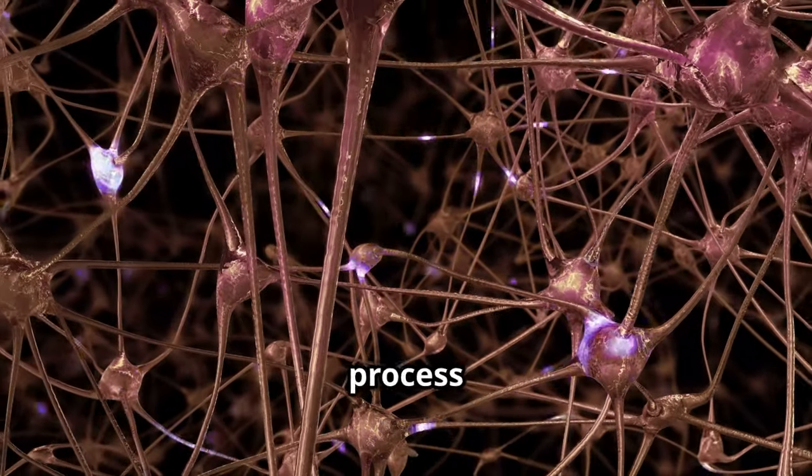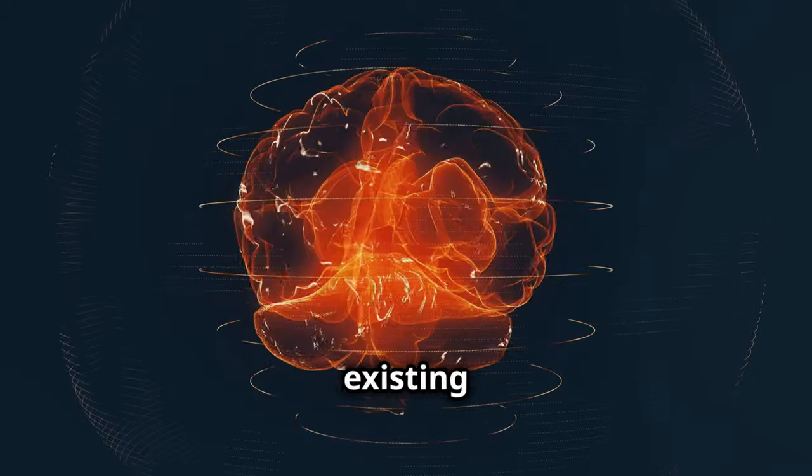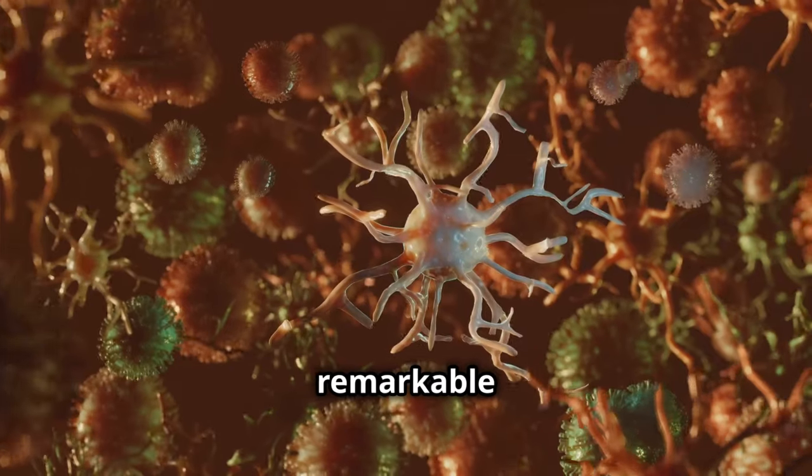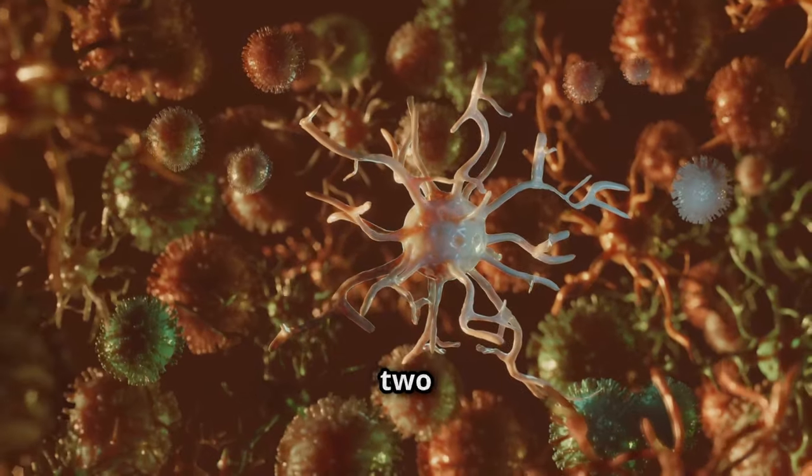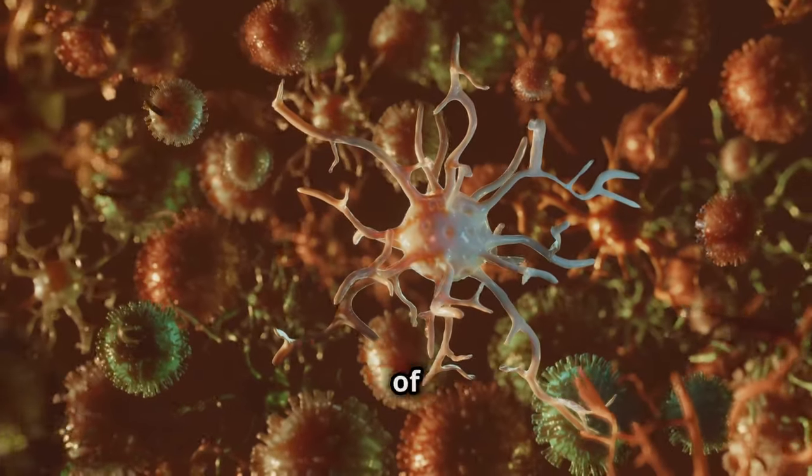Neurogenesis is a complex process that involves the birth, migration, and integration of new neurons into existing brain circuits. This remarkable phenomenon occurs primarily in two regions of the brain: the subventricular zone and the dentate gyrus of the hippocampus.